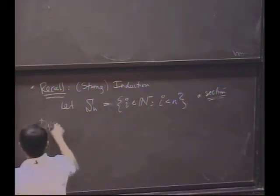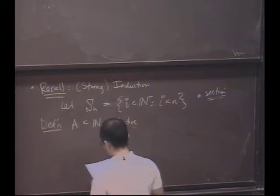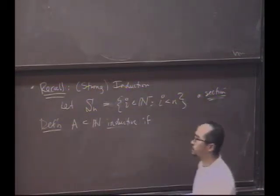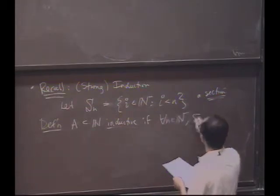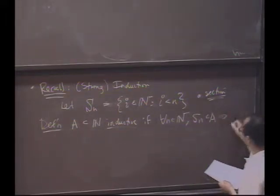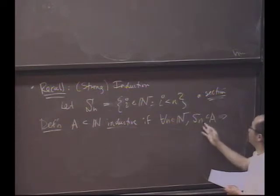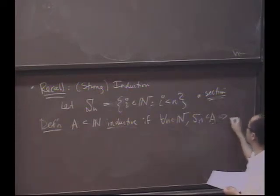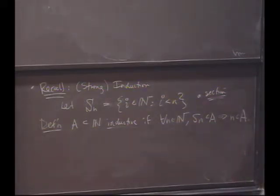So it's everything previous to n. And our definition was that A in N is inductive if we called a set inductive. If for all n in the natural numbers, if the section is in A, then what do we conclude about the set A? We call a set inductive if everything previous is in A, then n is also in A. That's what it means for a set to be inductive. So if the fact that everything less than n is in A means that n is also in A, we say A is inductive.